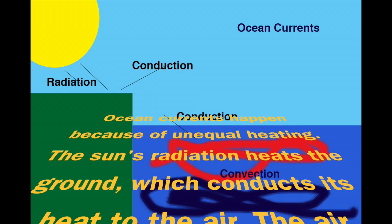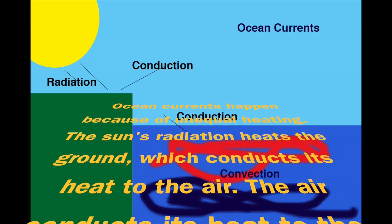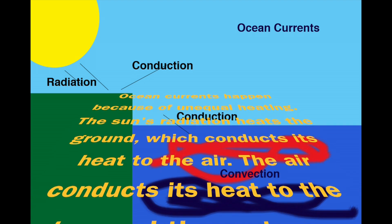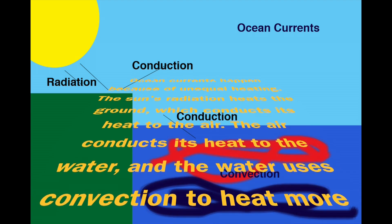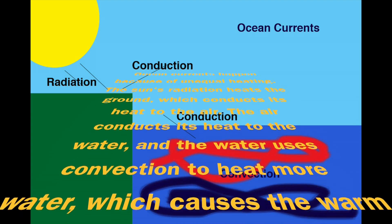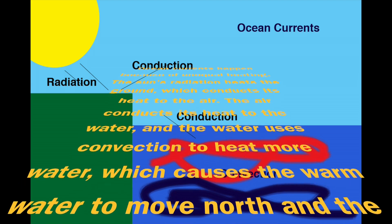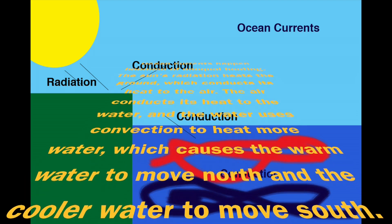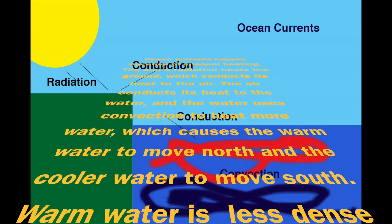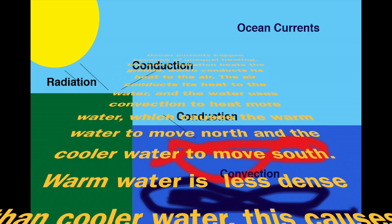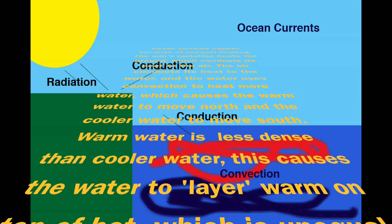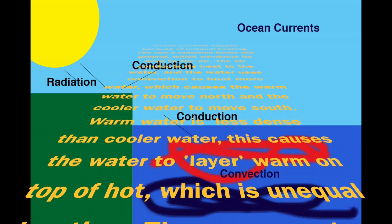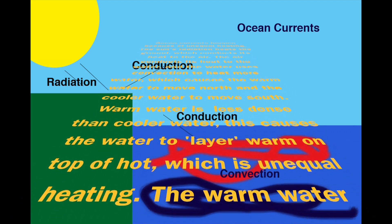The sun's radiation heats the ground, which conducts its heat to the air. The air conducts its heat to the water, and the water uses convection to heat more water, which causes the warm water to move north and the cooler water to move south.